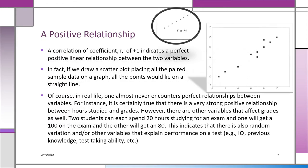Looking at the scatter plot at the top of the slide, you can see R is plus one. All the points are on a straight line — no point will be off the line. That's an R of plus one, which indicates a perfect positive linear relationship between the X and Y variables. If all the points are on a straight line with a positive slope, R is plus one, but that's not going to happen generally in the real world.